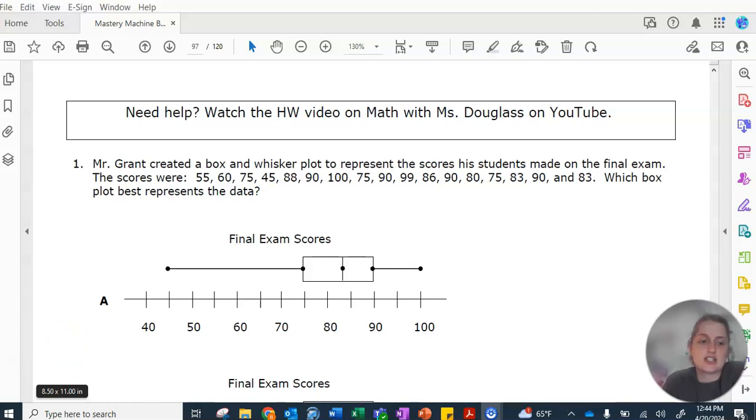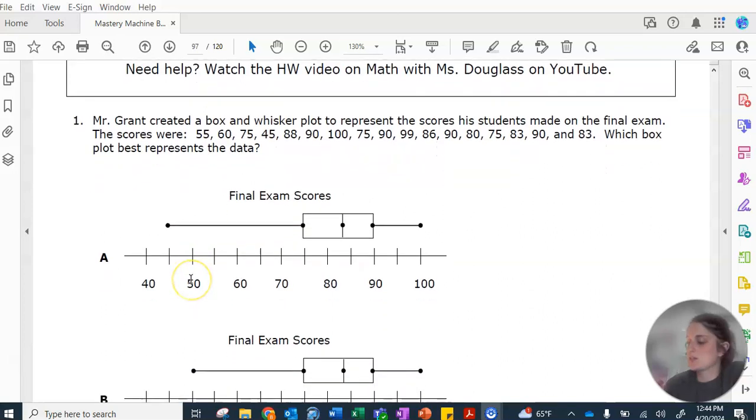Hey mathematicians, let's do your homework. We've got a box and whisker plot here, and we are trying to figure out which box and whisker plot represents the data in our list. Very annoyingly, it's not in least to greatest order. So that's going to be the first step, put it in least to greatest order.